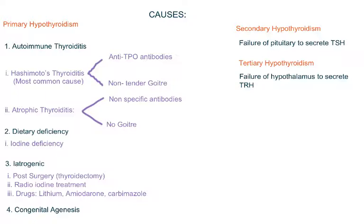Hashimoto's thyroiditis can be differentiated from atrophic thyroiditis by the presence of anti-TPO antibodies and a non-tender goiter. In Hashimoto's, anti-TPO antibodies are positive and there is painless swelling of the thyroid. In atrophic thyroiditis, there are non-specific antibodies and there will be no goiter because the gland has undergone atrophy — that means it has shrunken.